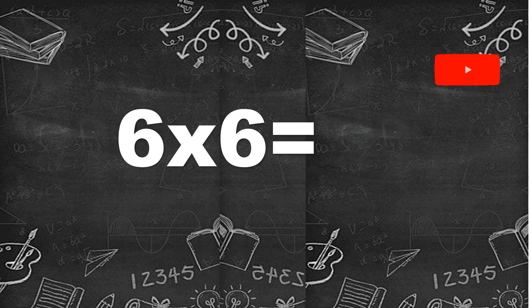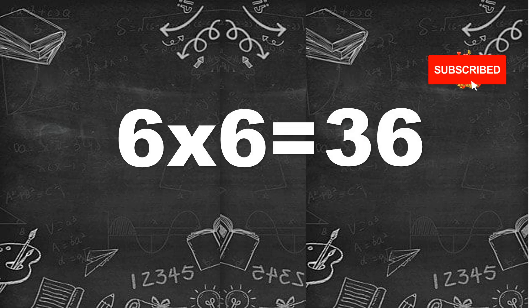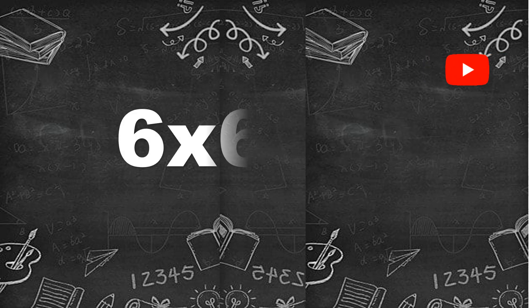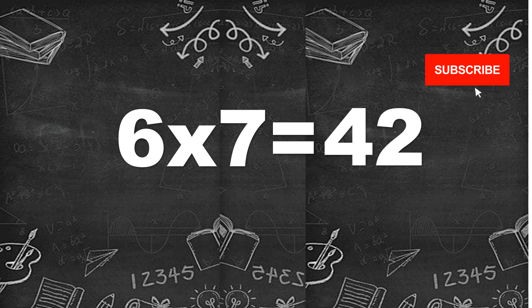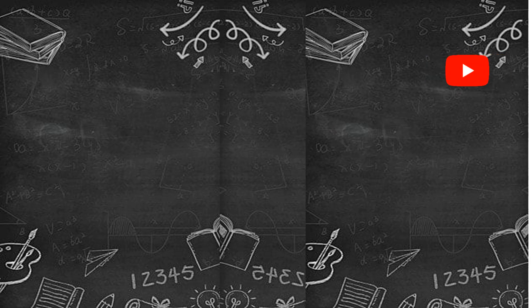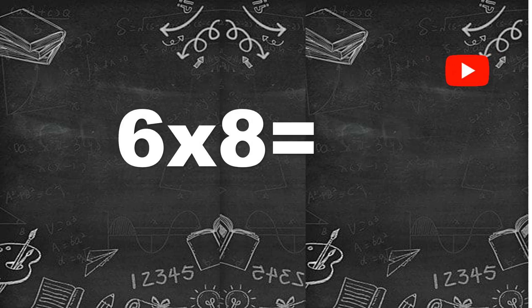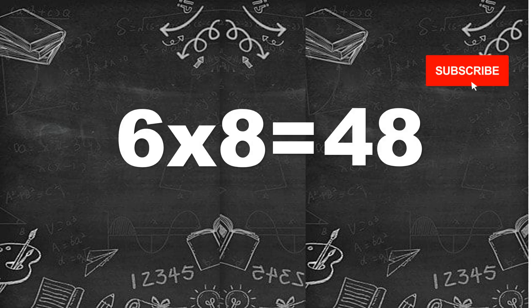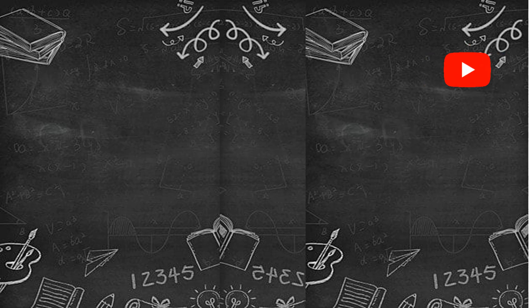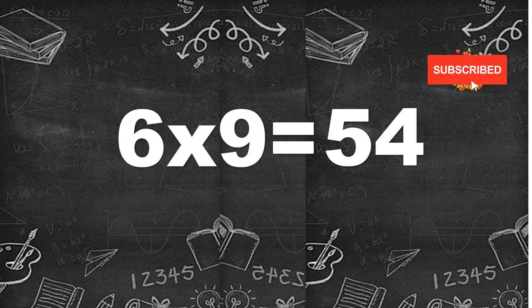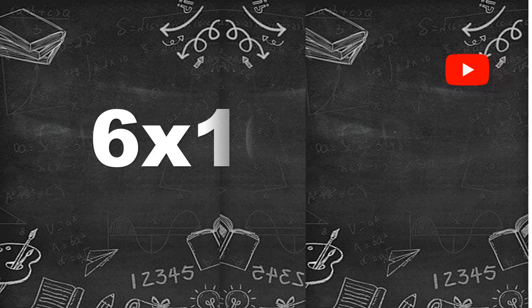Six fives are thirty. Six sixes are thirty-six. Six sevens are forty-two. Six eights are forty-eight. Six nines are fifty-four. Six tens are sixty.